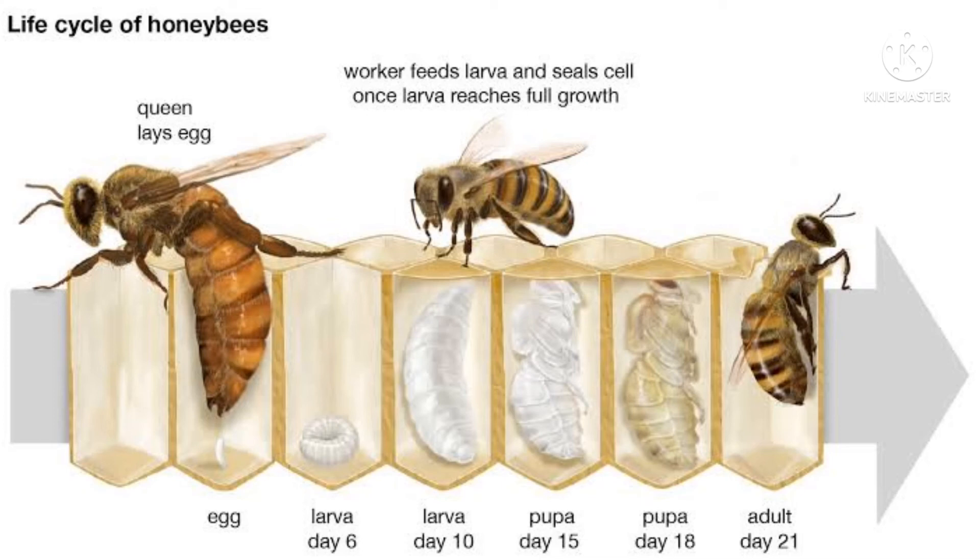After seven days, the larval form emerges out of the egg. The larval form hatches out. This is fed by the workers for five days. After that, the worker seals the brood cells.